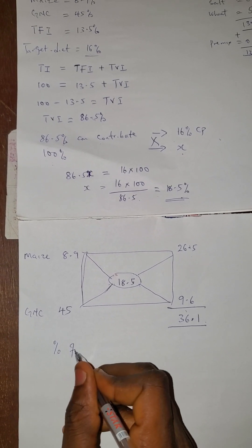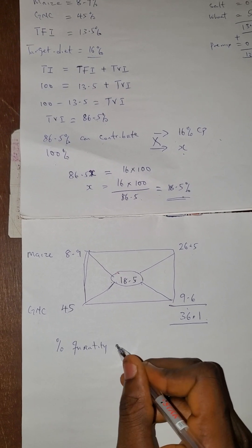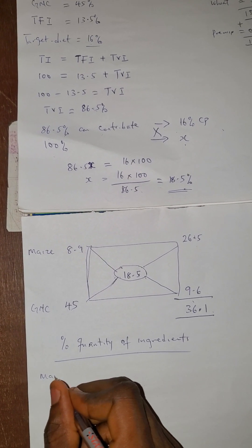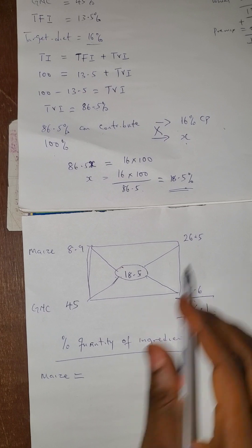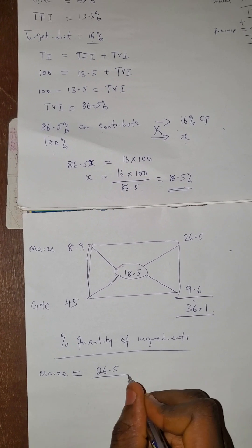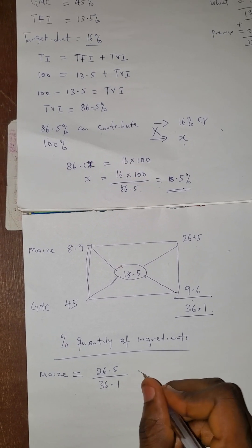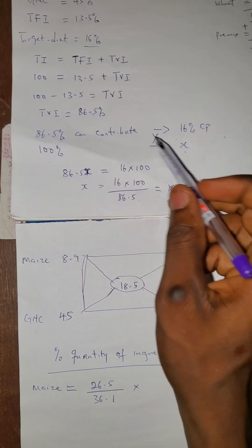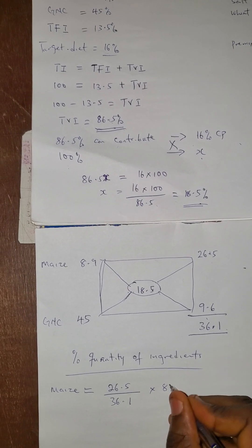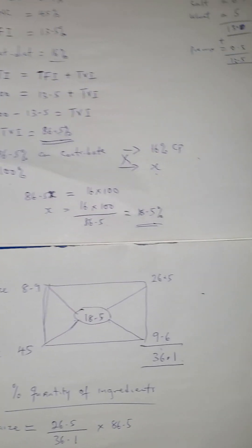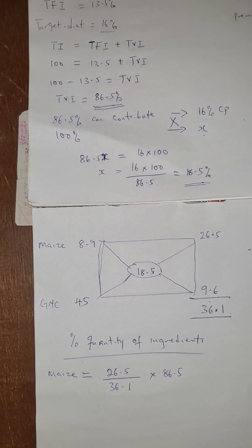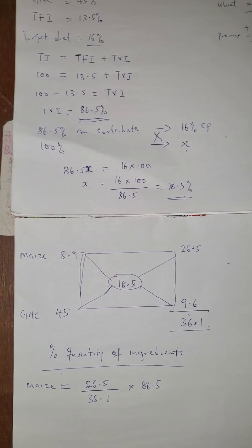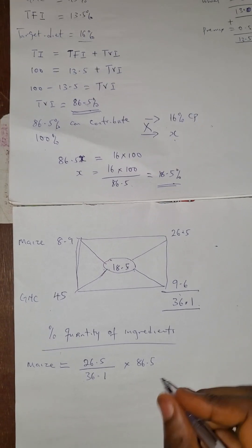Now the next thing is to go to percentage quantity of ingredients. For Maize: take its Pearson value of 26.5, divide by the total 36.1, then multiply by the total variable ingredients which is 86.5 — not 100, because we are using variable ingredients. So the formula is: 26.5 divided by 36.1, multiplied by 86.5.